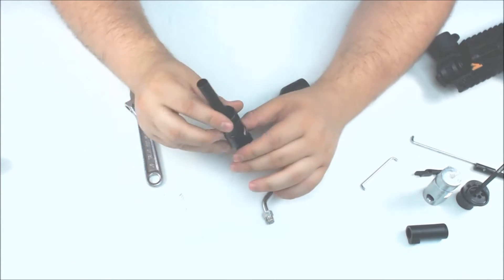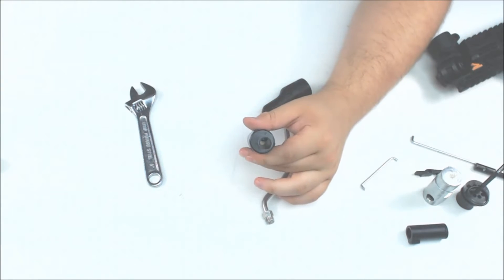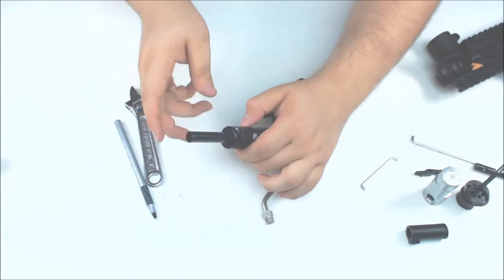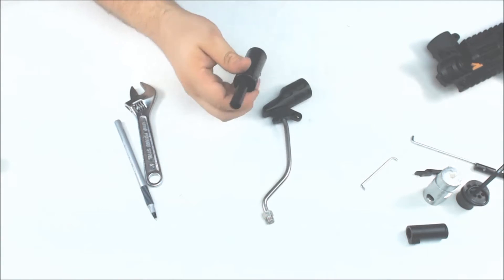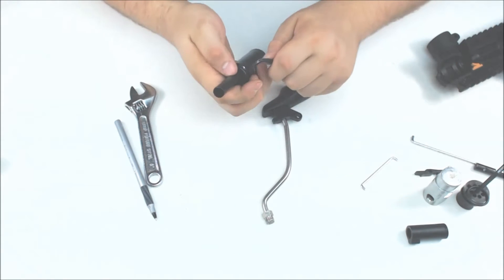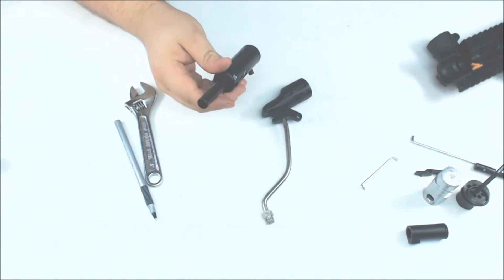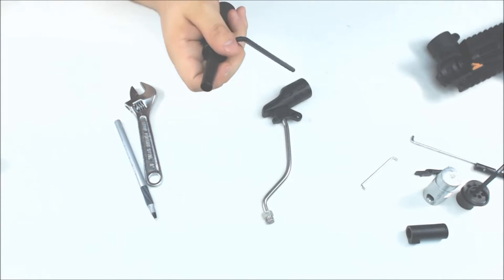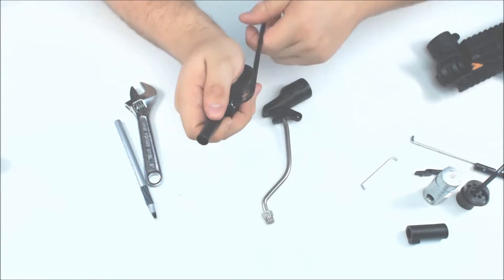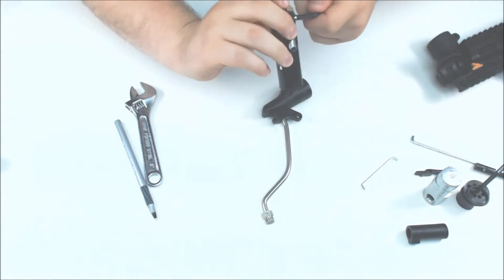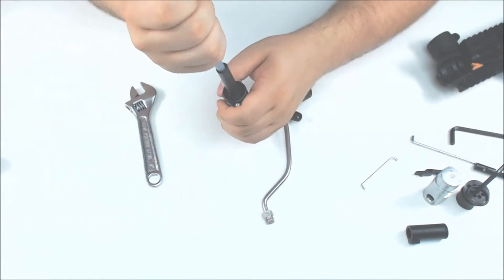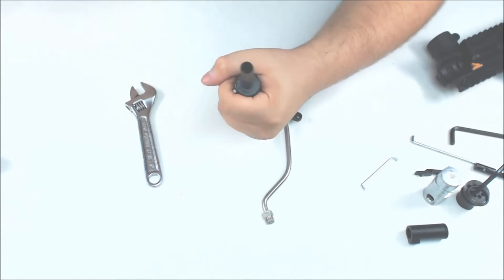You can also take a pencil or a pen and you have to have the velocity adjuster unscrewed a little bit. And then once that's out of the way, we can use a pencil or a pen and go down like that to pop out the valve.